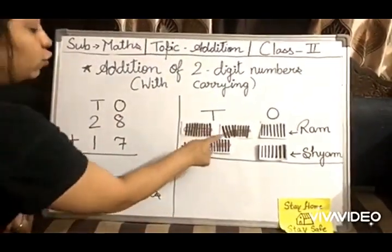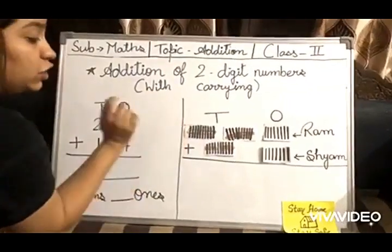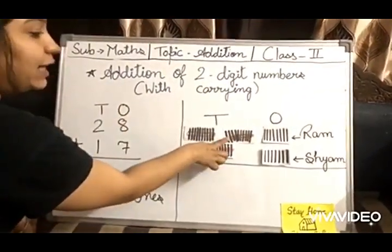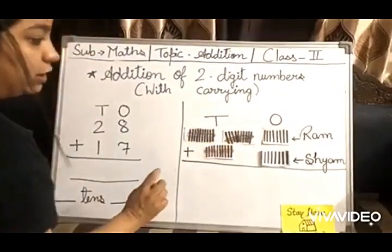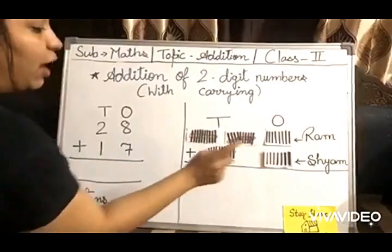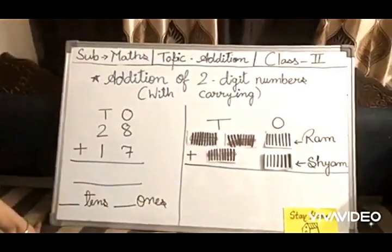But look children, he is having two bundles of sticks, and in each bundle he is having ten sticks. So 10 plus 10 is 20 and 8 loose sticks. So all together he is having 28 sticks, and Shyam is having 17 sticks.